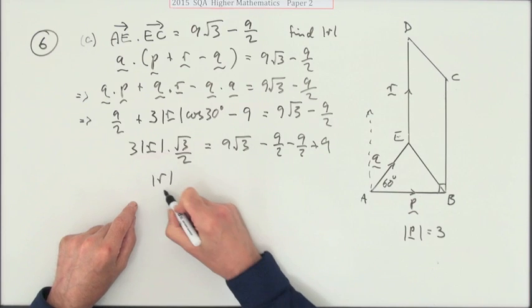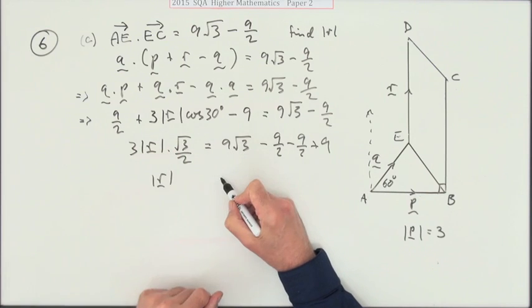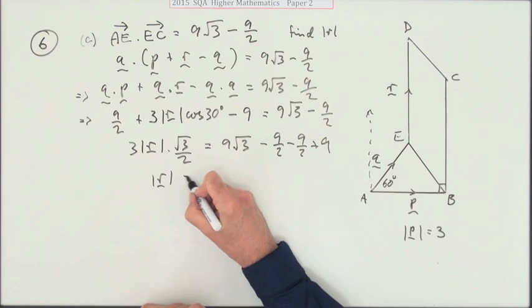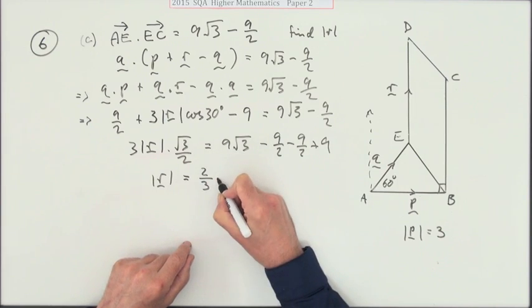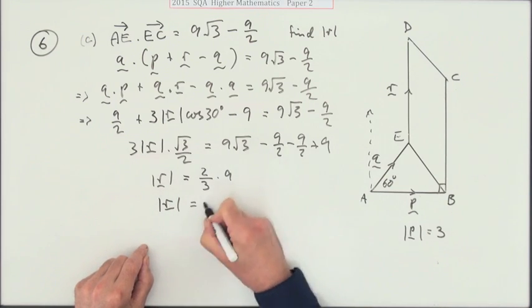And on this side, there's an awful lot going to disappear. Now the magnitude of r—that goes—so the root 3s will also cancel. So you've got 3 into 9 goes 3 times. 2 is 6. Well, I'll just show that working: 2 upon 3 times 9. So the length of r should be 6.